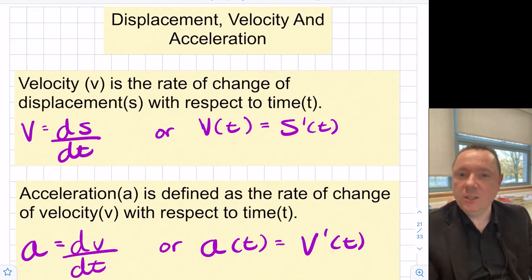Let's look at this in some context then, looking at the context of displacement, acceleration, and velocity. Velocity is the rate of change of displacement with respect to time. So in other words, if I wanted to write that as a formula, velocity would equal ds by dt, or in other words, v of t would equal s dash of t.